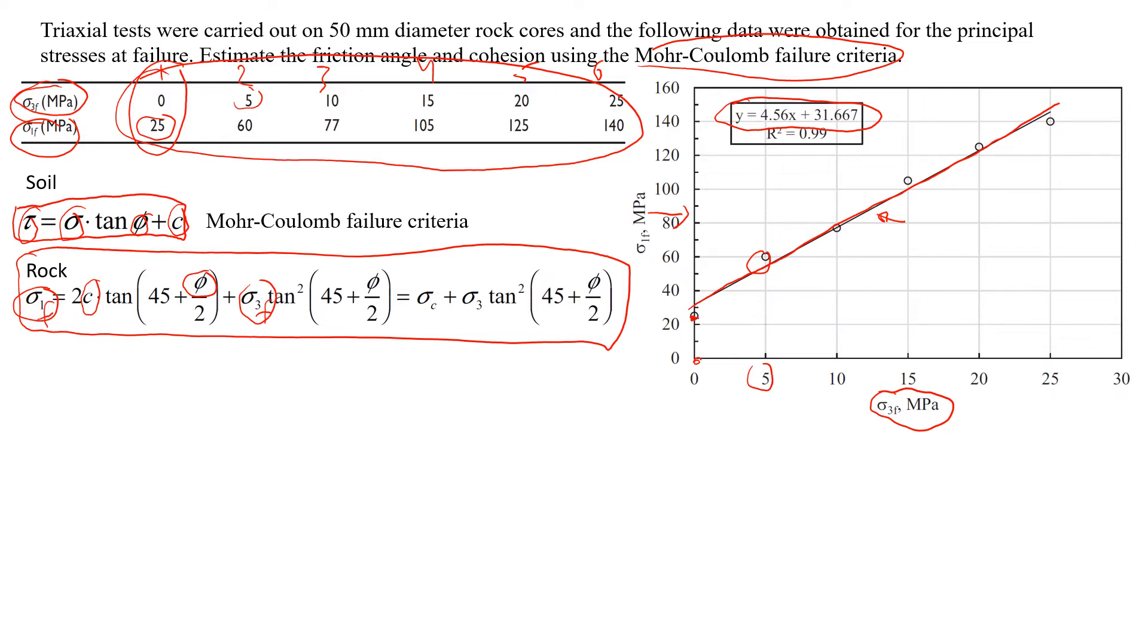And I'm going to rewrite this equation as sigma 1 at failure equal sigma 3 times tangent in the power of 2 (45 + φ/2) plus sigma c.